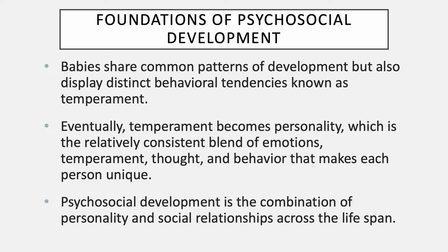Emotional well-being during the early years has a powerful impact on social relationships. Children who are emotionally healthy are better able to establish and maintain positive relationships with adults as well as with their friends. Social and emotional development is essential to a child's sense of well-being. The first relationships help shape who they are going to become and their understanding of the world. The important people in children's lives help lay the foundation for social-emotional skills such as self-regulation, empathy, turn-taking and sharing, and positive relationships with adults and peers.